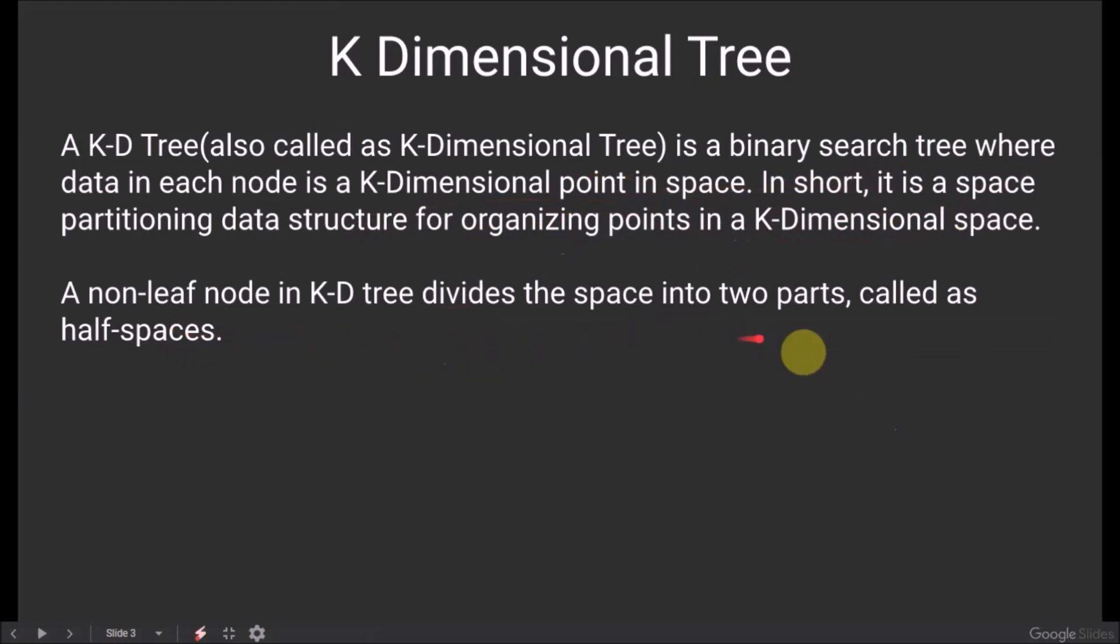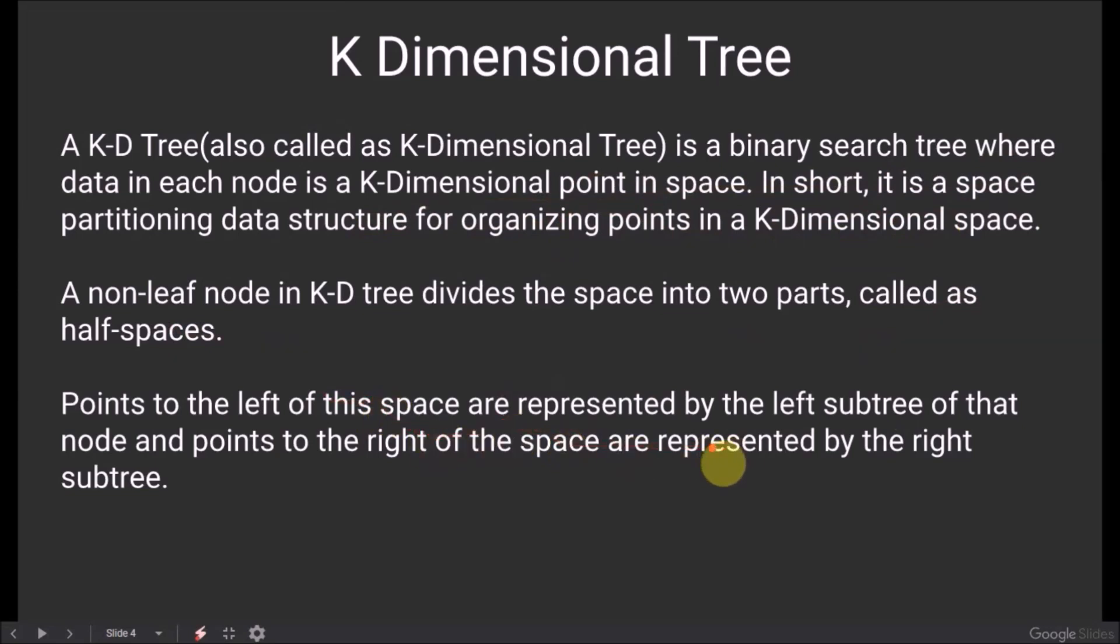A non-leaf node in KD tree divides the space into two parts, called as half-spaces. Points to the left of this space are represented by the left subtree of that node, and points to the right of the space are represented by the right subtree.